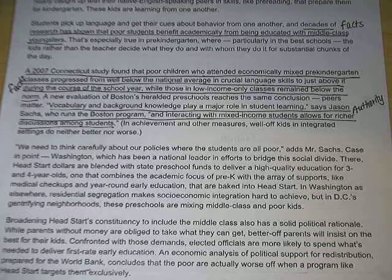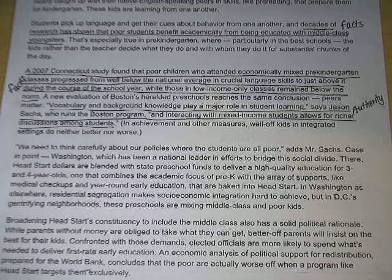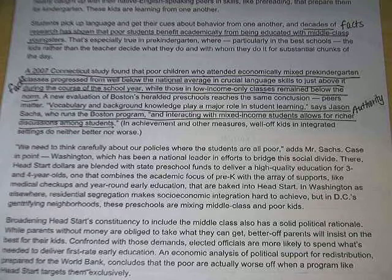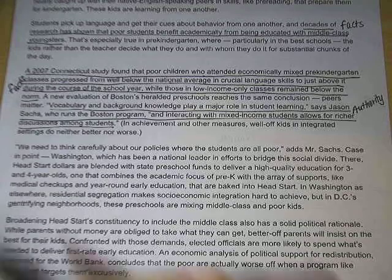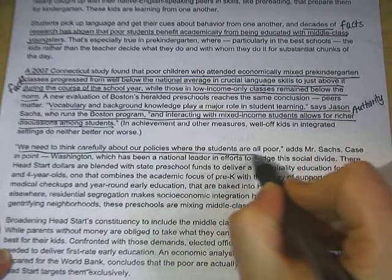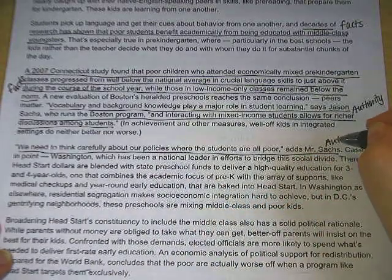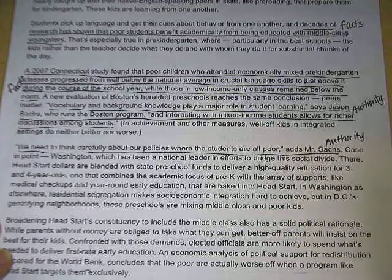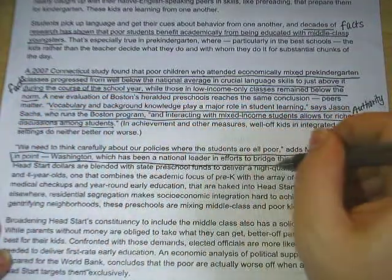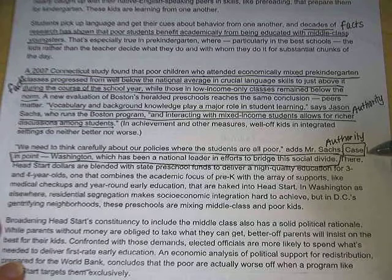'We need to think carefully about our policies where the students are all poor,' adds Mr. Sachs — so again, he is an authority. 'Case in point: Washington, which has been a national leader in efforts to bridge this social divide. Their Head Start dollars are blended with state preschool funds to deliver a high-quality education for three- and four-year-olds, one that combines the academic focus of pre-K with the array of supports like medical checkups and year-round early education that are built into Head Start.' This is our second example program, following Rosemont.